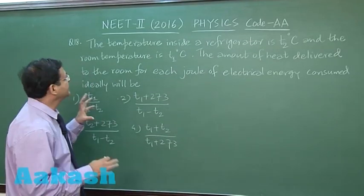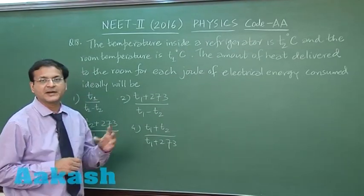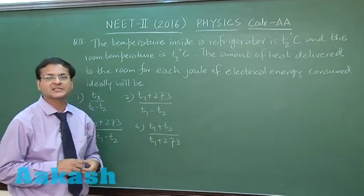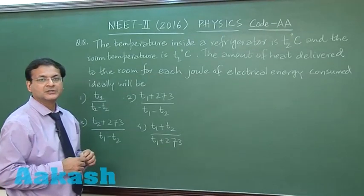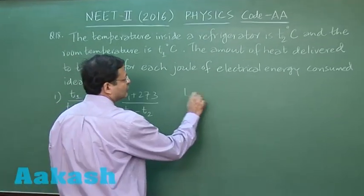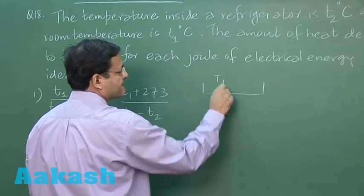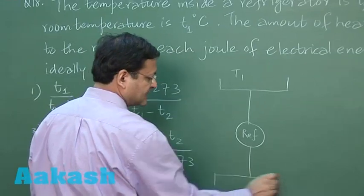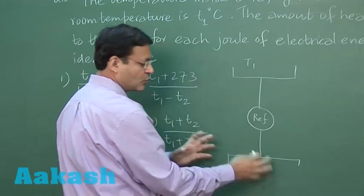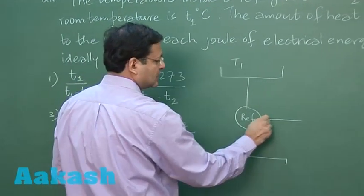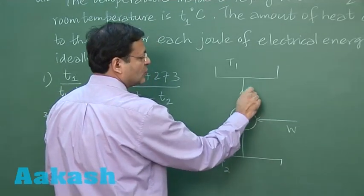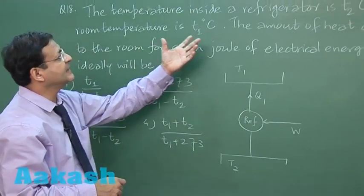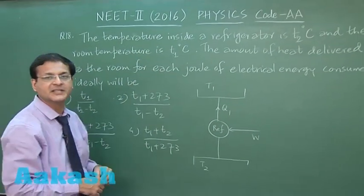Now this question 18 is based on the concept of ideal refrigerator. It says that temperature inside a refrigerator is T2 degree Celsius. So this is cold reservoir temperature. If you draw the typical block diagram of refrigerator, this is cold, this is hot, W is given here, this is Q1, this is hot reservoir, this is cold reservoir.